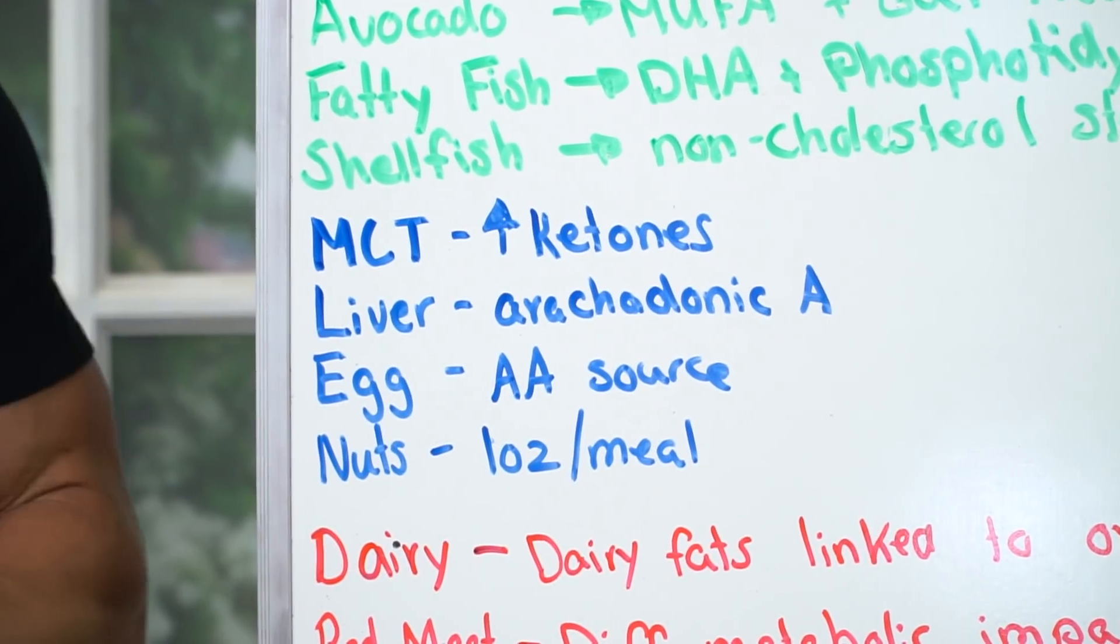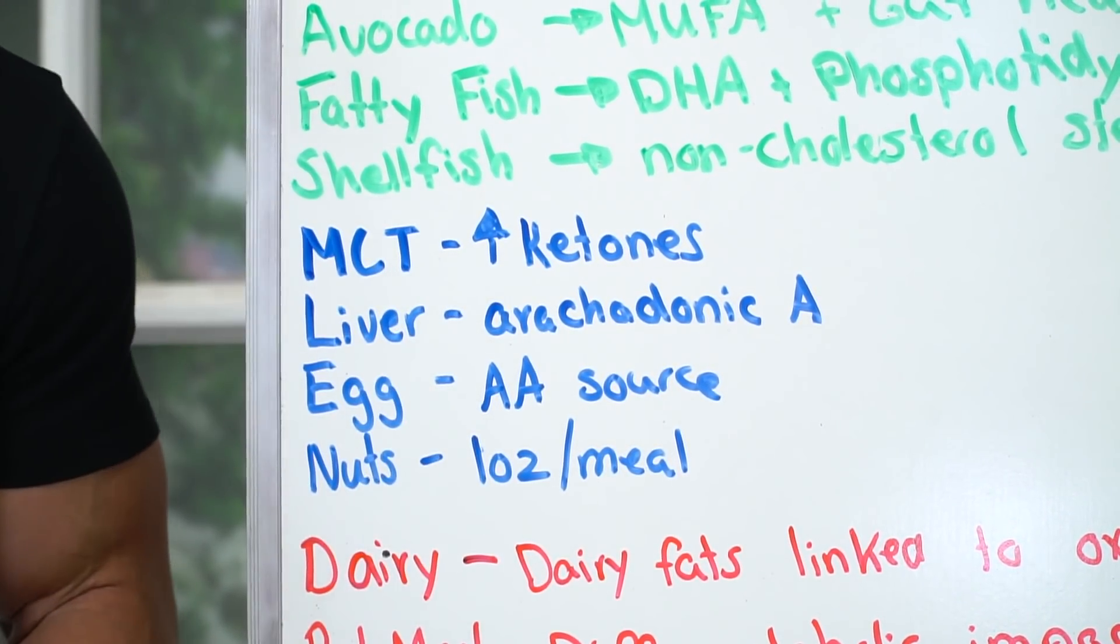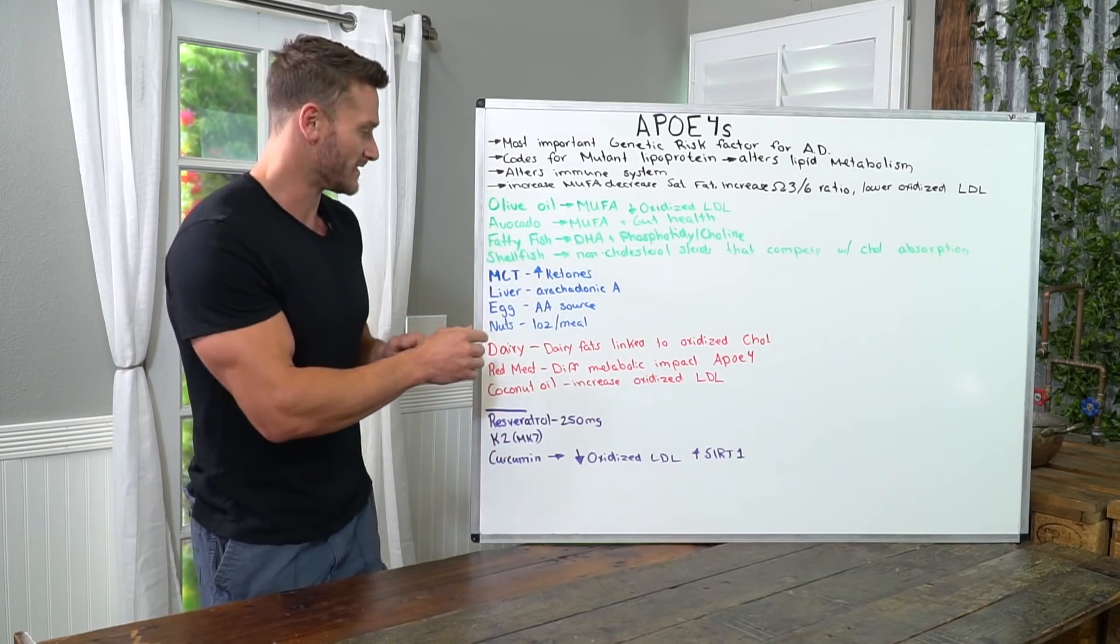Here's what you can have in moderation. MCT oils, technically derived from saturated fats. However, they elevate ketones so much you get neuroprotective effects that I think are going to be beneficial and outweigh some of the other negative pieces.